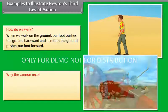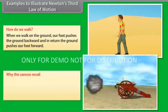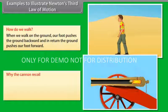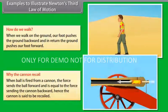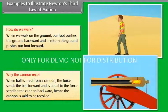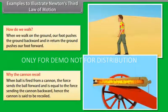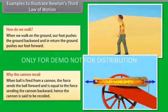Why does the cannon recoil? When a ball is fired from a cannon, the force sends the ball forward and is equal to the force sending the cannon backward. Hence the cannon is said to be recoiled.